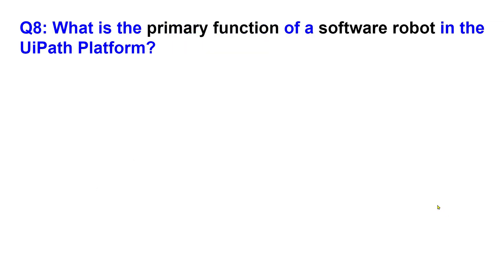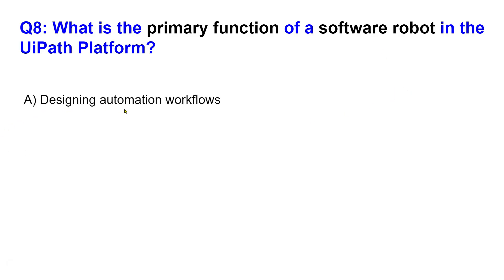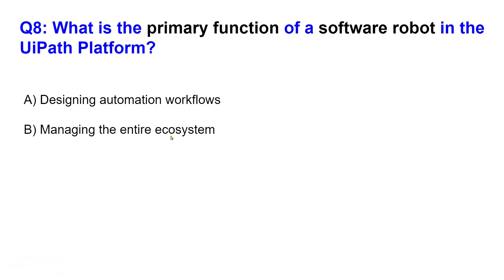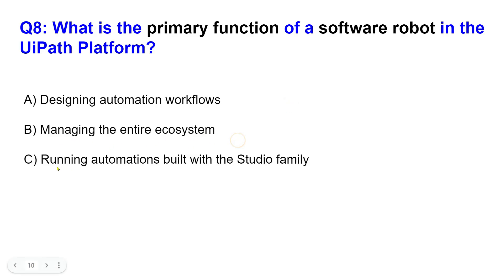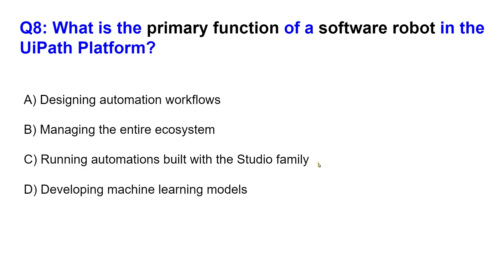Let's see the next question: what is the primary function of a software robot in the UiPath platform? Option A: designing automation workflows. Option B: managing the entire ecosystem. Option C: running automations built with Studio family. Option D: developing machine learning models. This is quite a simple answer — please comment your answer for question number 8.